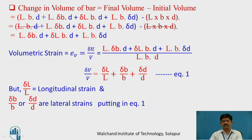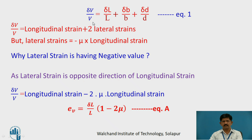Volumetric strain is change in volume upon original volume. Dividing the change in volume by the original volume and separating the terms, we get delta L by L plus delta B by B plus delta D by D. We know that delta L by L is longitudinal strain, whereas delta B by B or delta D by D are lateral strain. So delta V by V equals delta L by L plus delta B by B plus delta D by D. But lateral strain equals minus mu times longitudinal strain — pause the video here and try to answer why lateral strain has a negative value.